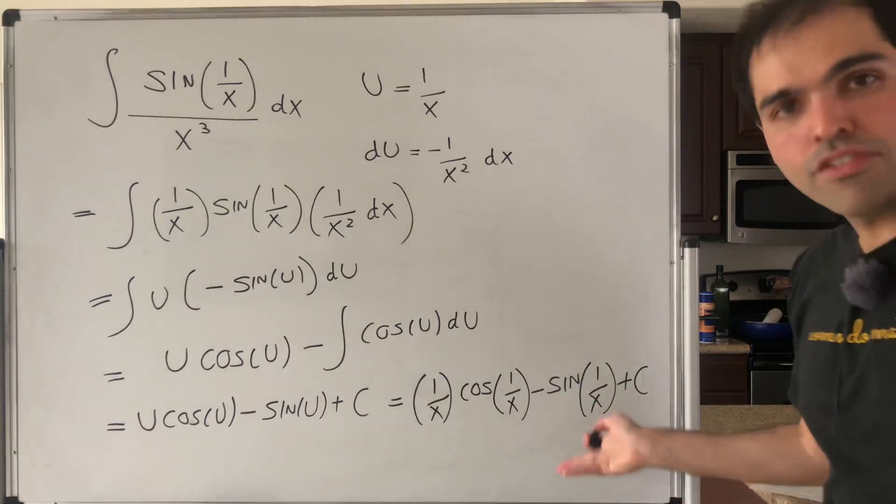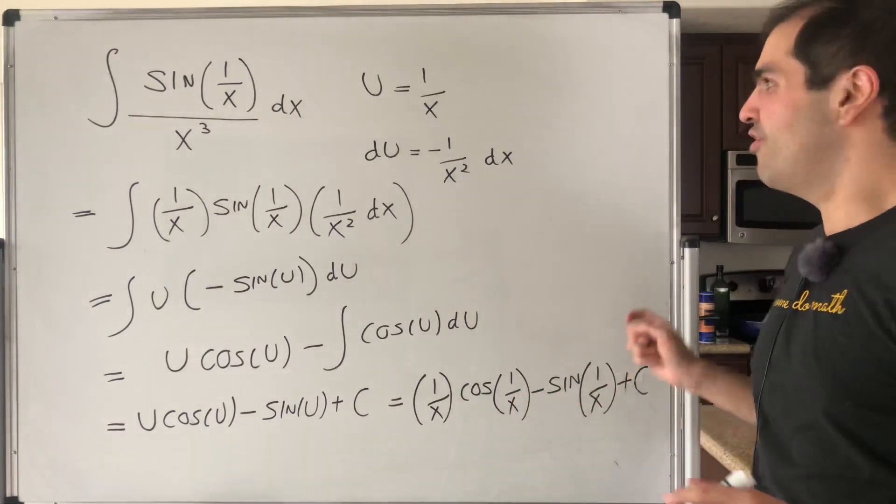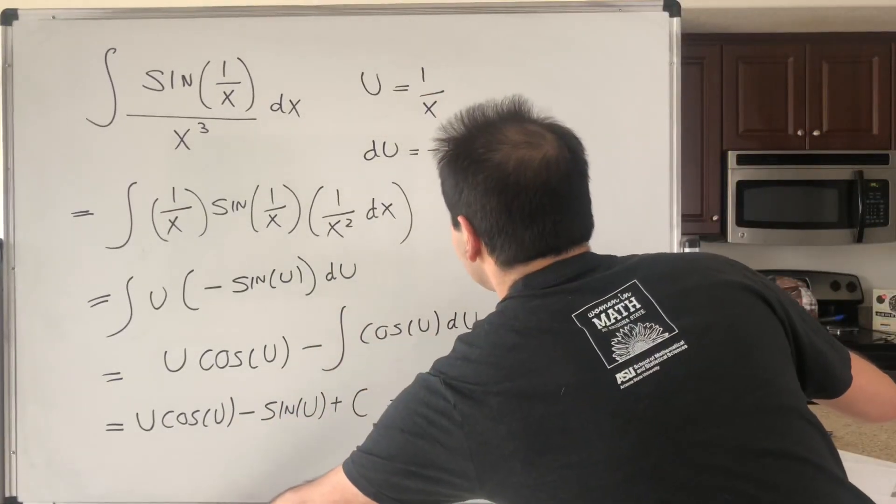And here's the thing. When I first saw this result, I didn't believe it. So let's check this with differentiation. So the derivative of this, using the Product Rule, becomes as follows.